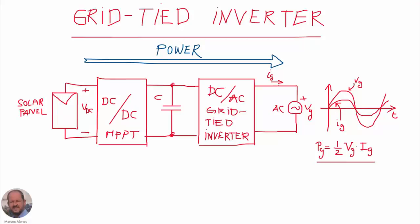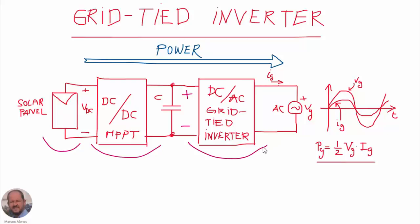A grid-type inverter is a power converter in which we have a DC input power source, like a solar panel, generating a DC voltage. We use first a DC-DC converter in order to generate an appropriate level of voltage at the input of the grid-type inverter. This DC-DC converter usually incorporates a maximum power point tracking methodology to optimize energy extraction. The grid-type inverter, properly speaking, corresponds to the stage connecting the DC level with the AC network.